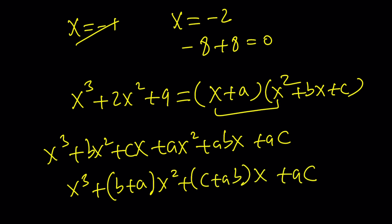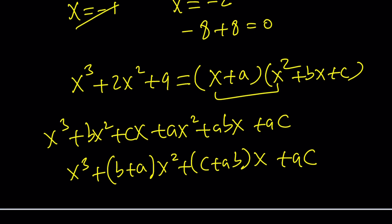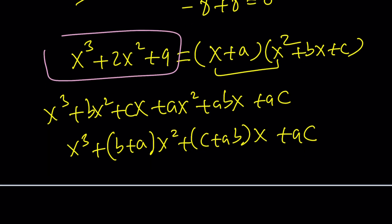And then, by rearranging the terms a little bit, like b plus a is the coefficient of x squared and c plus ab is the coefficient of x and then ac is the constant term. Now, you can kind of compare this to this one so that the coefficient of x squared will be 2. The coefficient of x would be 0 because there is no x in the original polynomial and ac should be 9.